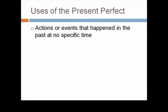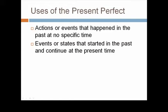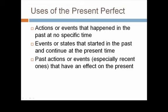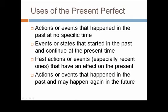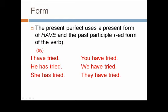Remember, we use the present perfect to refer to actions or events that happened in the past at no specific time, and events or states that started in the past and continue at the present. We use this tense for past actions or events, especially recent ones that have an effect on the present. And we use this tense to refer to actions or events that happened in the past and may happen again in the future.